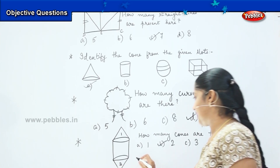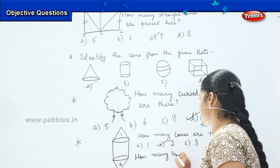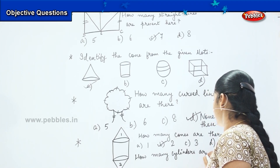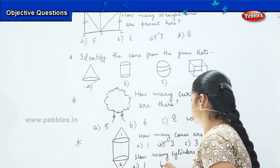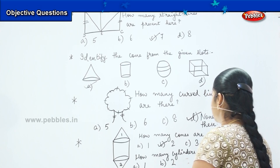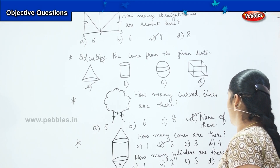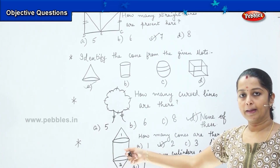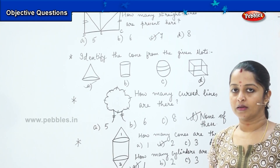The second part of the question asks: how many cylinders are there? Options are 1, 2, 3, and 4. There is just the one in the middle. So option A: 1 is the right answer. Clear, children?